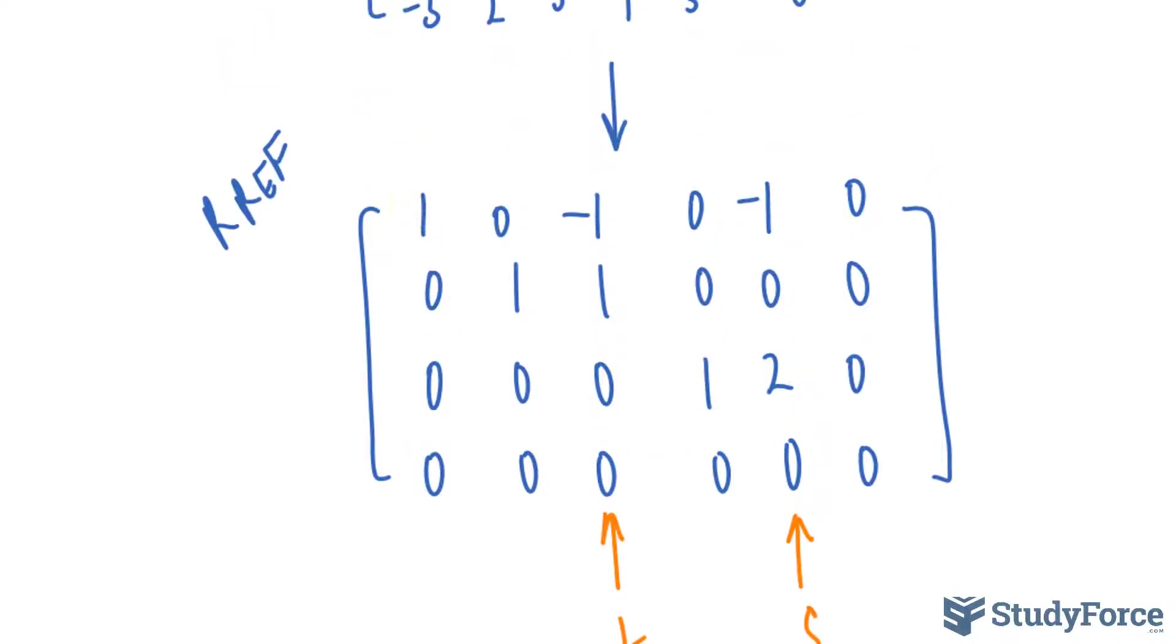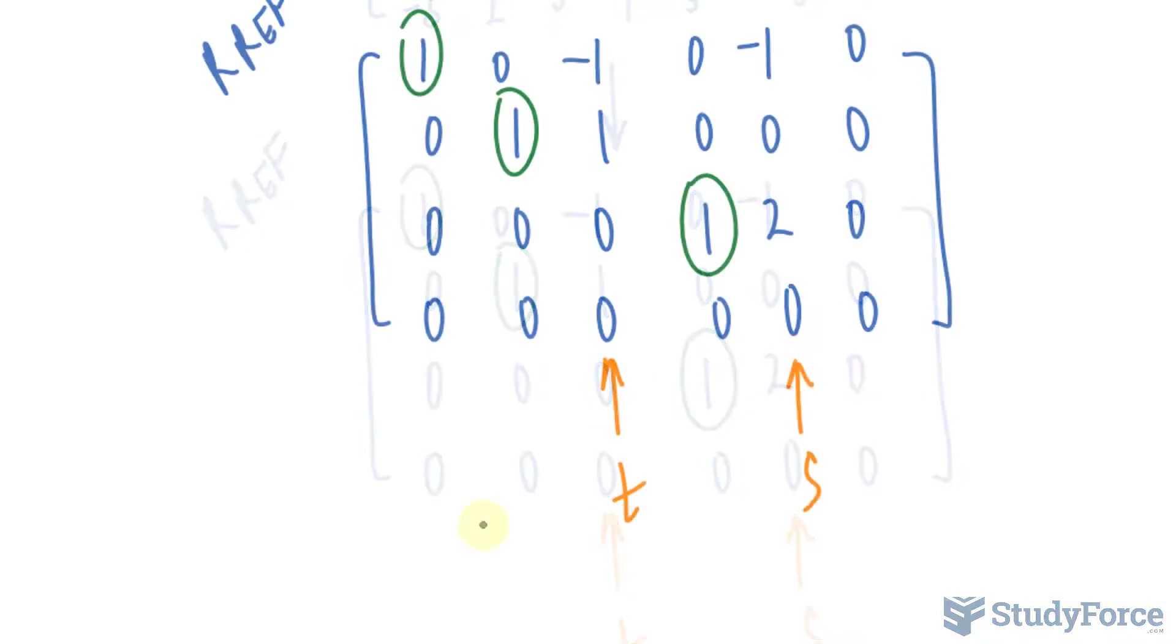Whereas every other column, this one, that one, and that one have a leading one. The reason why it's important that you identify your parameters is because our basis depends on these two.